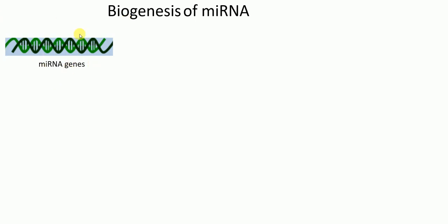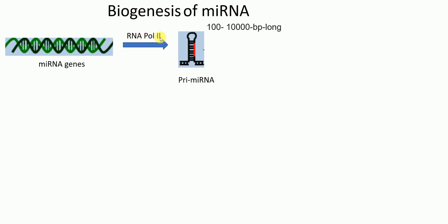Micro RNAs have micro RNA genes in the DNA. These micro RNA genes are transcribed by RNA polymerase II, and this results in primary or primordial micro RNA, which has a stem-loop structure and is about 100 to 1000 base pairs long.